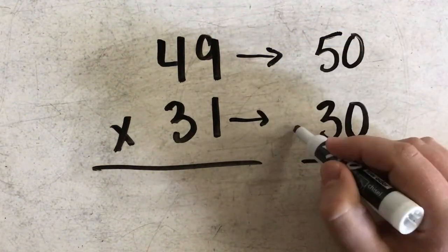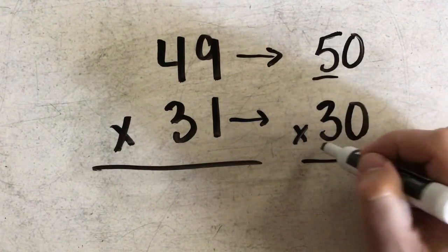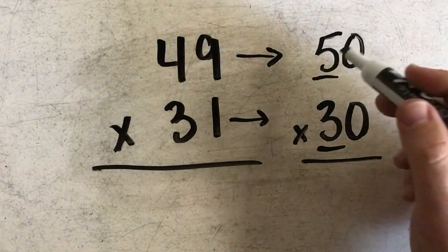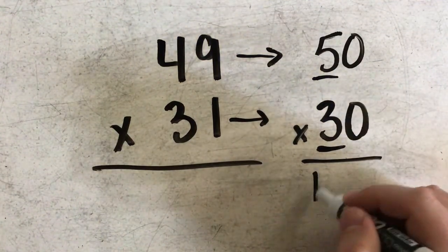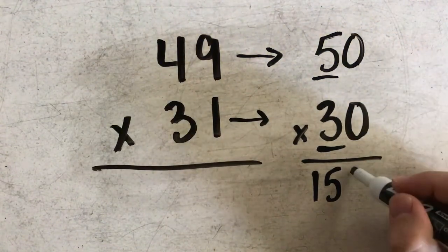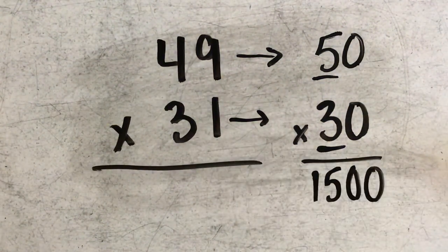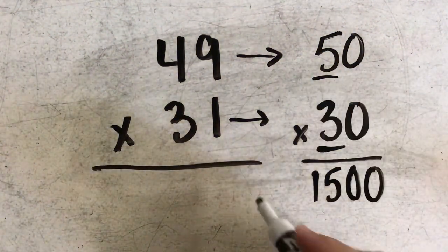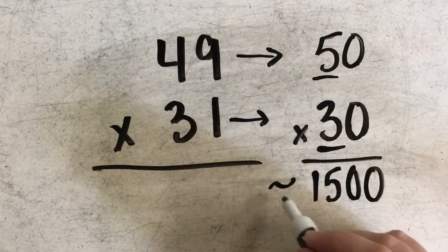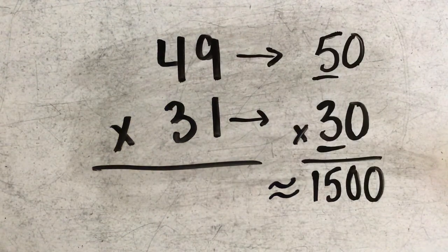And then again, when I multiply these, I'm really just multiplying my two first numbers, which in this case are 5 and 3. And 5 times 3 is 15. And then I want to include my two zeros, since I have two zeros in my problem. So I would say that the answer to 49 times 31 would be about 1,500.